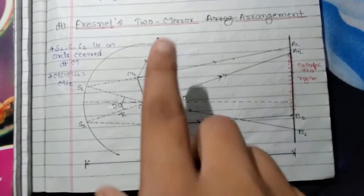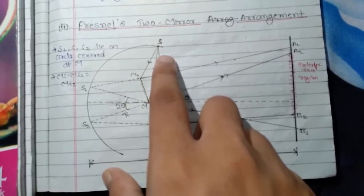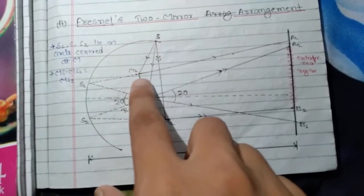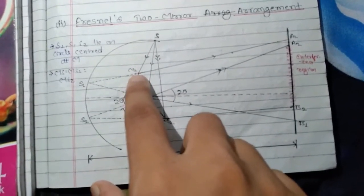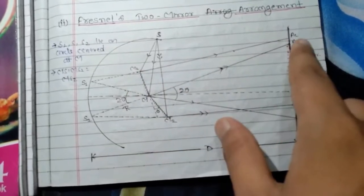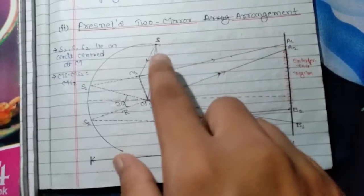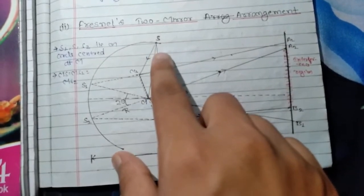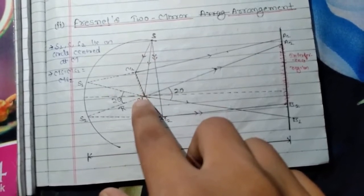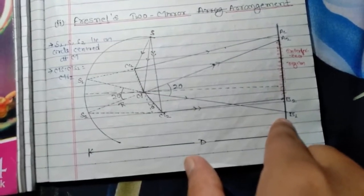He used a single source of light S. When the light ray falls on mirror M1 at point M1, the ray is reflected in this direction at A1. When the ray of light falls from source S at the end of mirror M1 at point M, it is reflected in this direction at point B1.